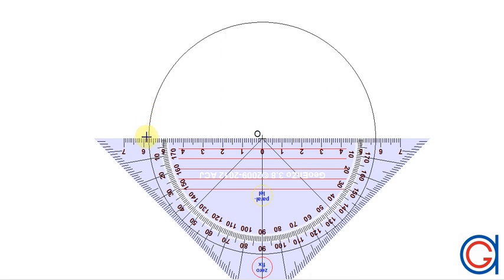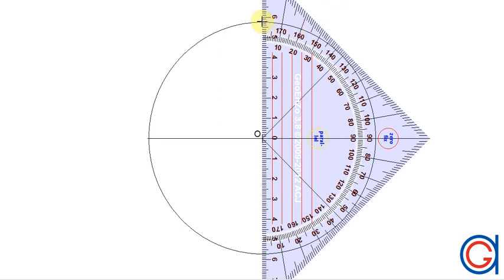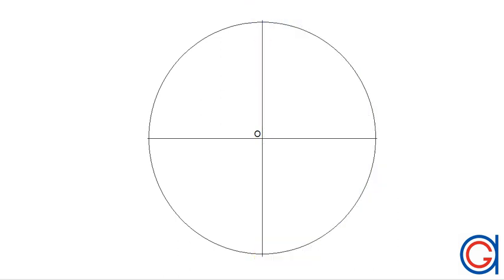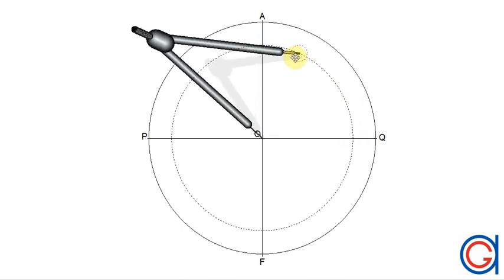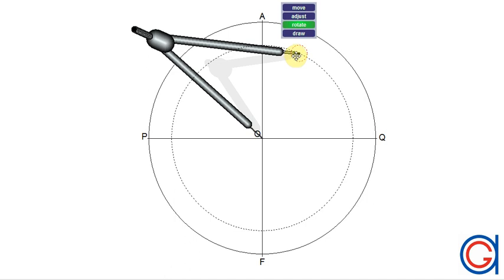The first thing we are going to do is to draw a horizontal diameter which cuts our circumference at points P and Q, as can be seen here in the video. The second step is to draw a vertical diameter perpendicular to our previous diameter. Our new vertical diameter will cut our circumference at two points which we will call A and F. The next step is to calculate the perpendicular bisector of the radius OQ.